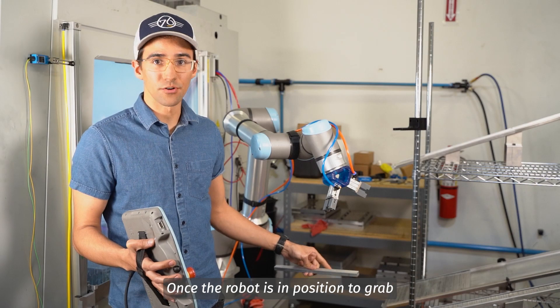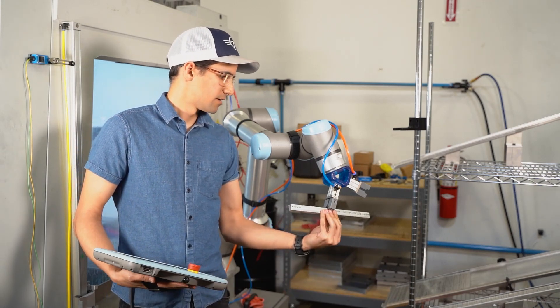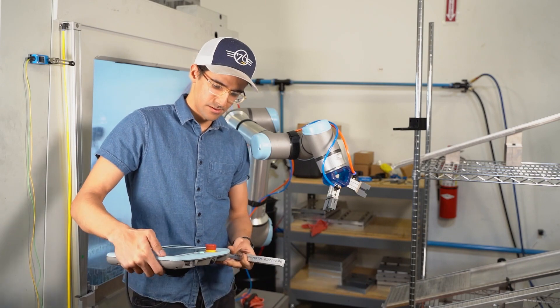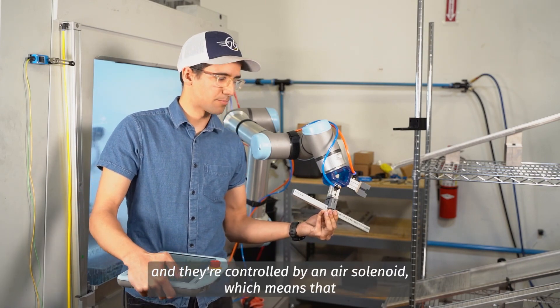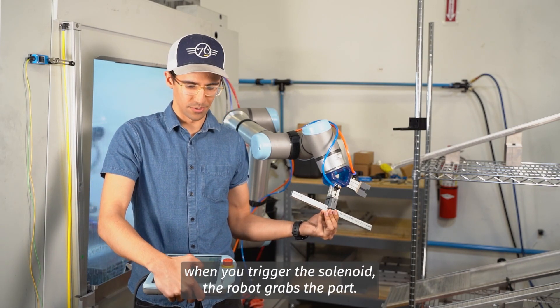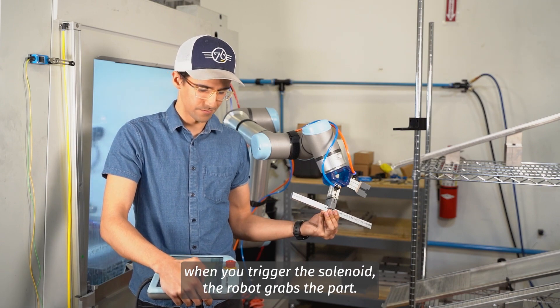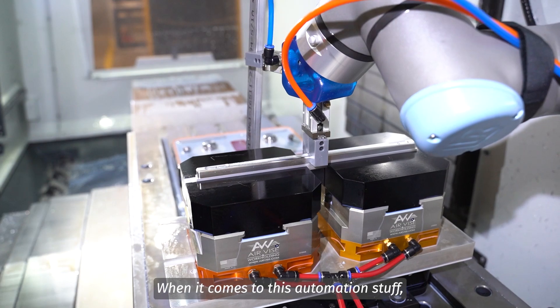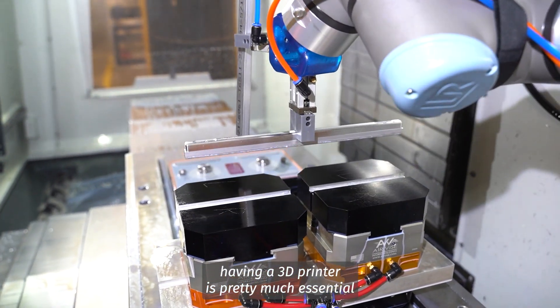Once the robot is in position to grab, we have these gripper fingers here which were 3D printed, and they're controlled by an air solenoid, which means that when you trigger the solenoid, the robot grabs the part.